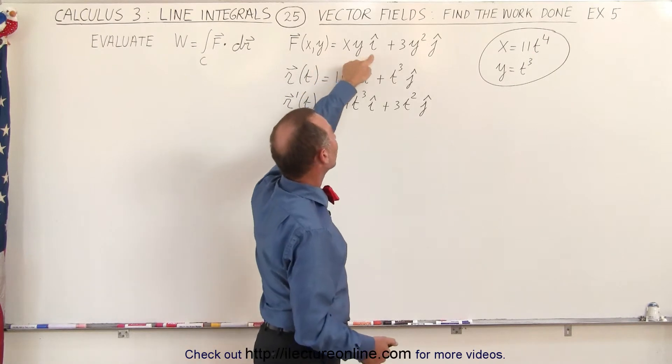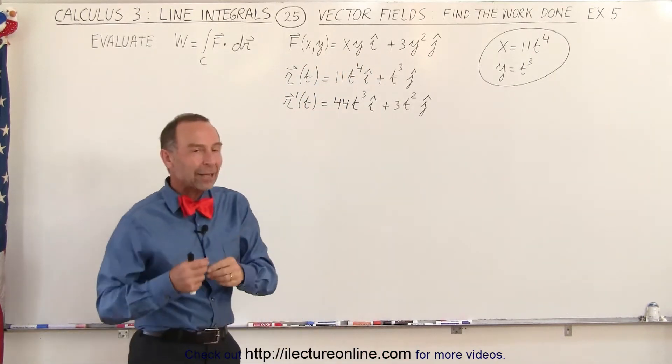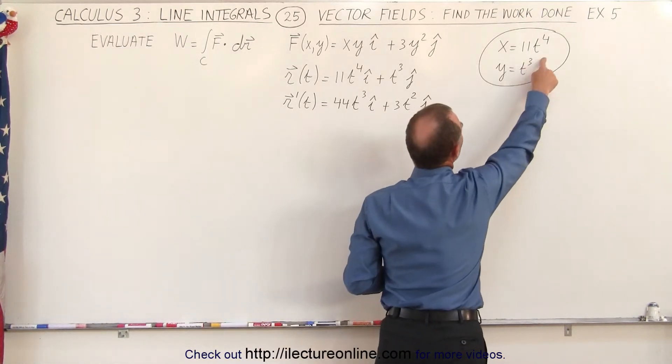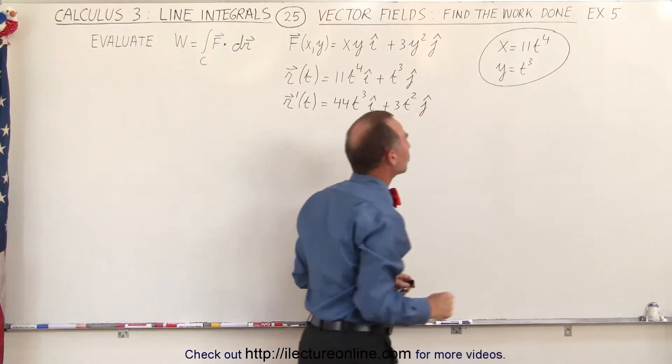We have x times y in the i direction, plus 3y squared in the j direction. But the path we're going to take tells us that the parameters in terms of t, x can be defined as 11t to the 4th, and y is equal to t cubed.